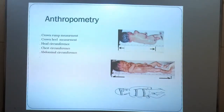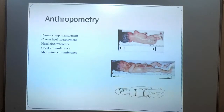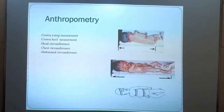In anthropometry, the crown-to-rump measurement, crown-to-heel measurement, head circumference, chest circumference, and abdominal circumference should all be noted.